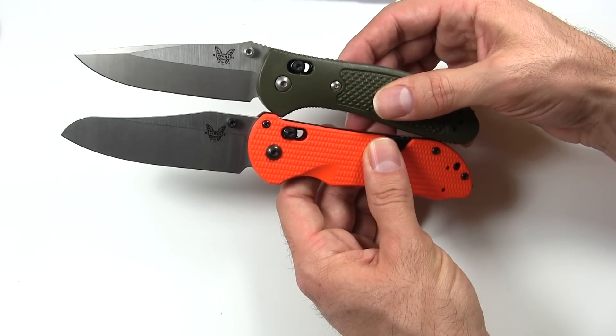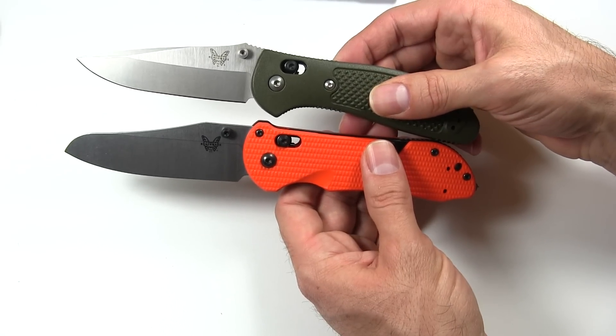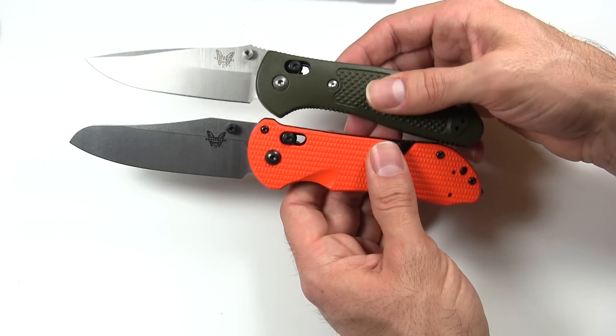The blade's pretty similar in length. Griptilian, 3.45 inches, and the Triage is 3.5 inches.